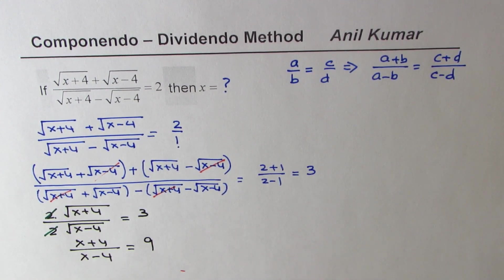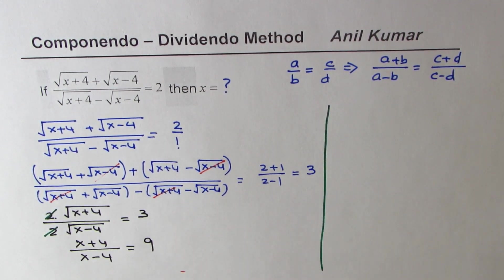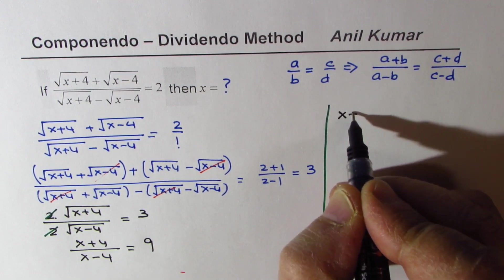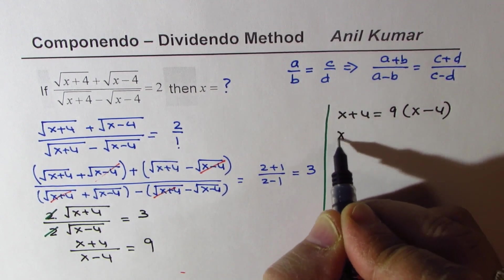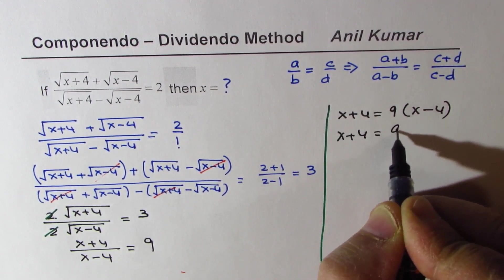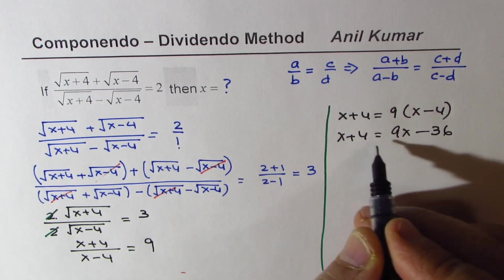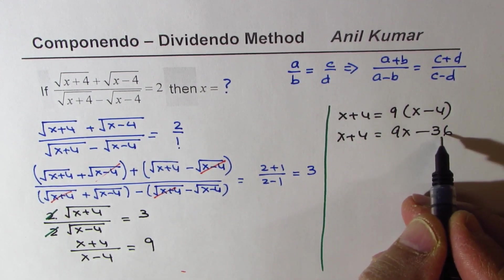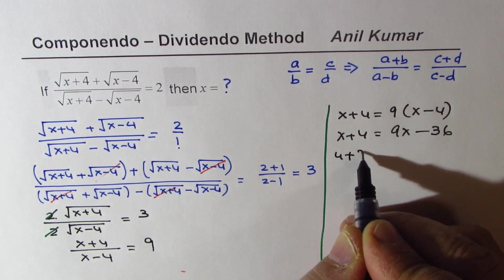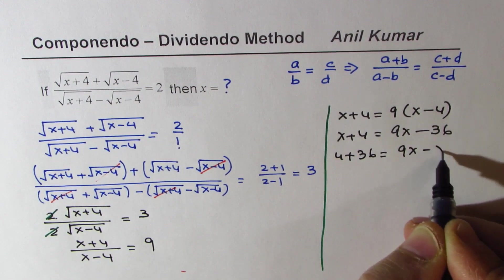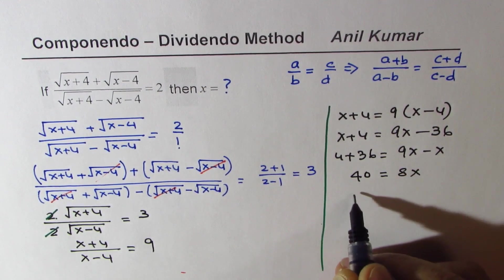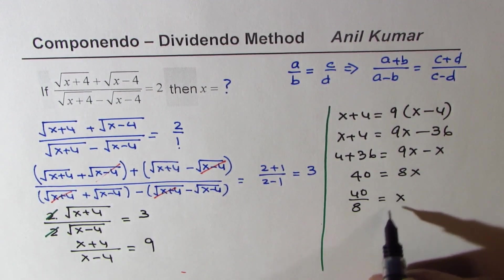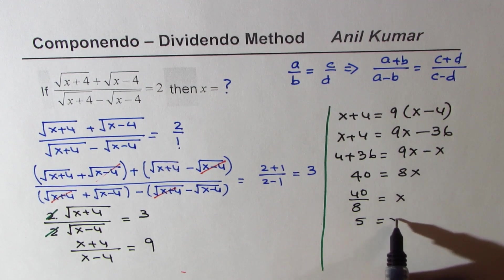This is now a very simple equation to solve. Cross multiplying gives x plus 4 equals 9 times x minus 4, or x plus 4 equals 9x minus 36. Taking constants to one side: 4 plus 36 equals 9x minus x, so 40 equals 8x, and x equals 40 divided by 8, which gives x equals 5.